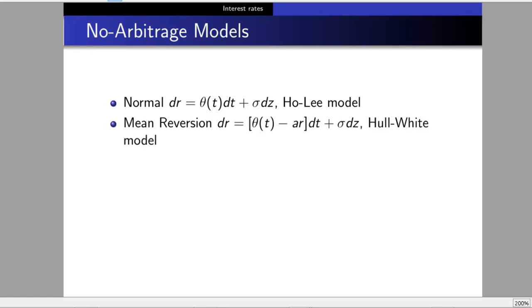The mean reversion model, dr = [θ(t) - ar]dt + σdz, is called the Hull-White model. The mean-reverting term has r in it, but the noise term doesn't, so it's not lognormal.